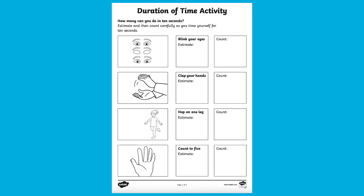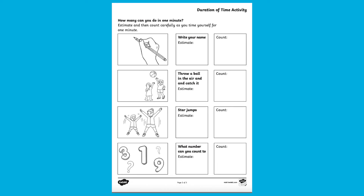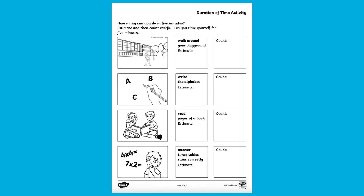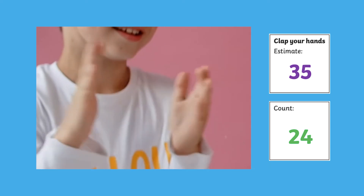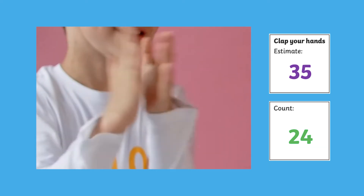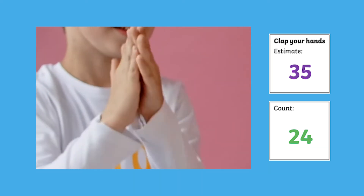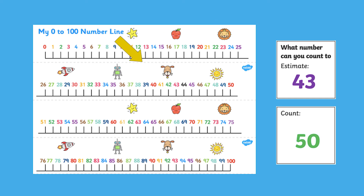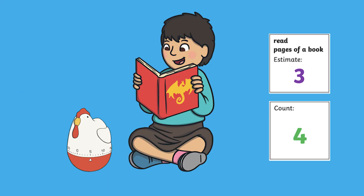You could also have a go at this duration of time activity. Can your child estimate how many times they'll do an activity and compare it to the real number? How many times will they clap their hands in 10 seconds? Or how many numbers will they count in one minute? How many pages of a book can they read in five minutes?